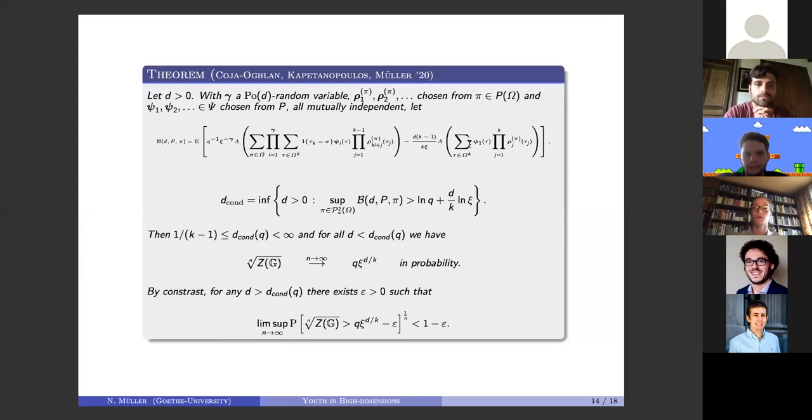This functional b is a compact version of the beta free entropy. From this functional we can read off the condensation threshold. The theorem states that the condensation threshold is strictly positive and not infinite. Before condensation, you can explicitly determine the exponential growth factor of the partition function.